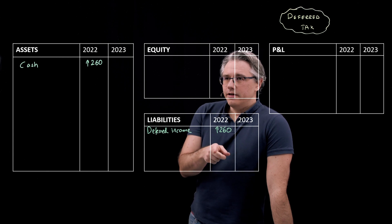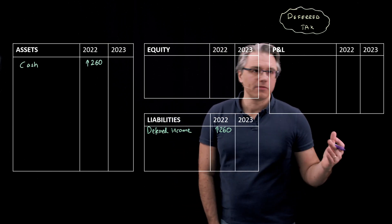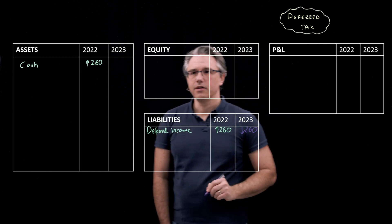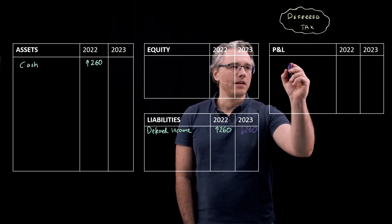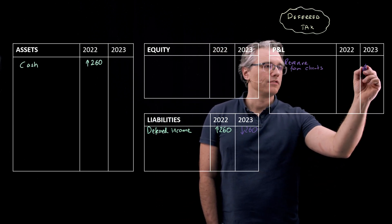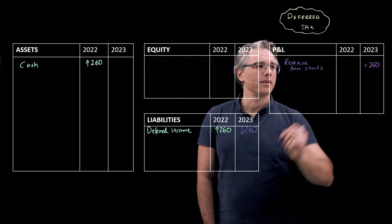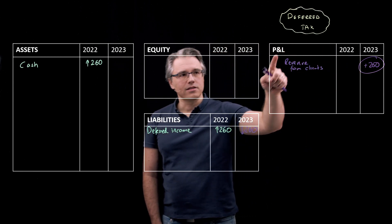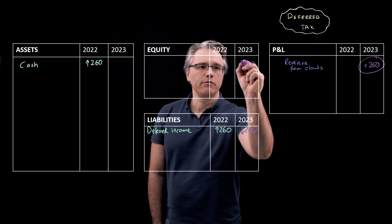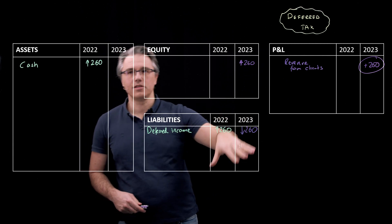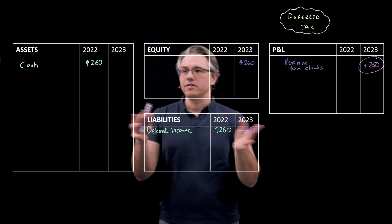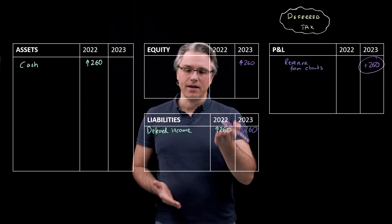In the subsequent year, when the services are actually rendered — when the magazines are shipped to clients — this liability of €260,000 will disappear and be recognized as revenue from clients, because it belongs to the year 2023. This is when it will also be transferred to equity with a positive impact, naturally offsetting the liability reduction so that the overall balance sheet total doesn't change. In 2022, we had a corresponding increase to both assets and liabilities.